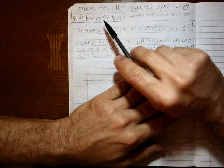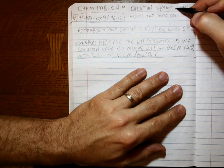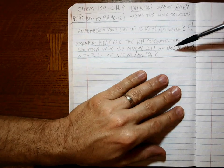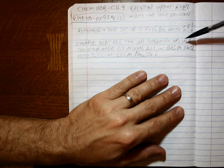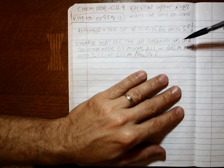Back at it. Chem 110B Chapter 9, Dilution Without Reaction. Hey, how do you know that there's no reaction? In this class, the problem doesn't show one, so that's nice. We are going to have some problems later in which a reaction is shown.